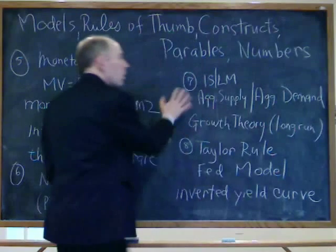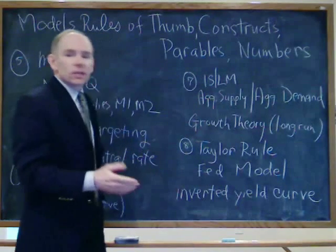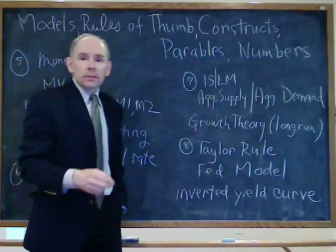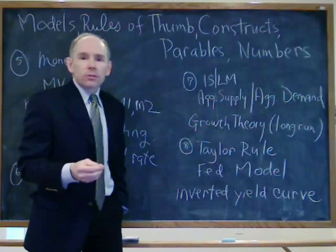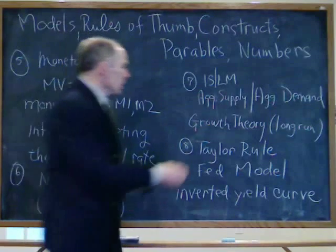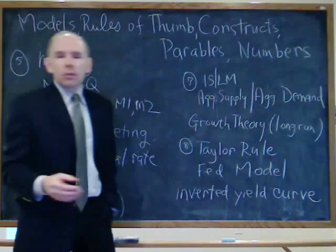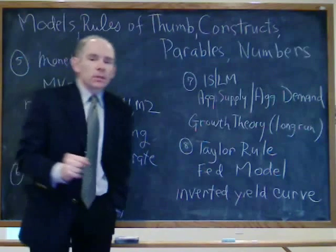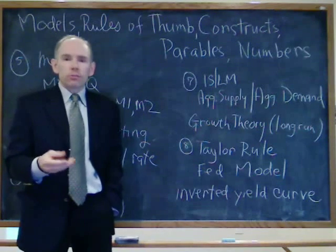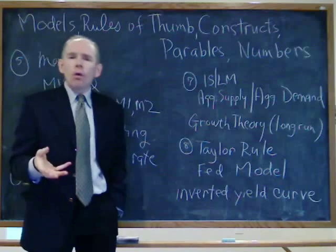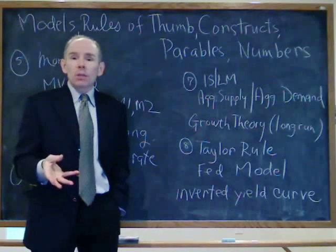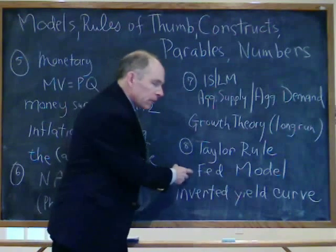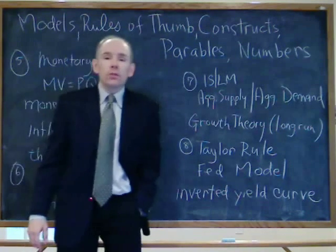Then we can talk about models more so out of the macroeconomics textbook like IS-LM, a very popular model; aggregate supply and aggregate demand — it sounds like a micro model of supply and demand but it's very different; and growth theory, which is a long-run model of an economy. And then what I'm going to do now is go into three models in great detail — three relatively prominent models — to see if they hold up, because some people rely on them a real lot. I'm going to do the Taylor Rule, I'm going to talk about the Fed model, and I'm going to talk about the inverted yield curve.